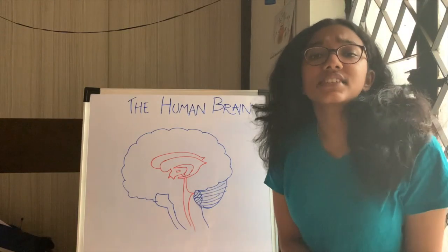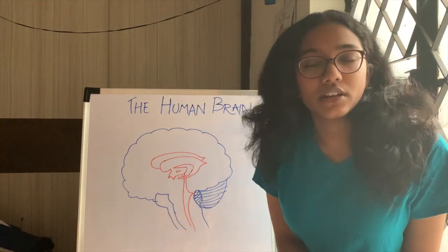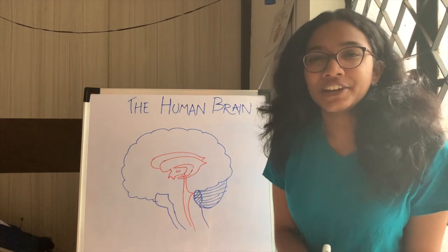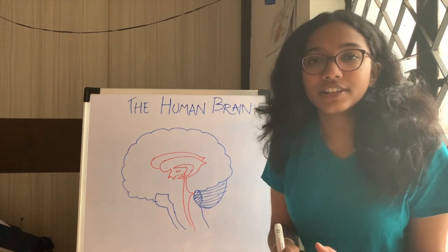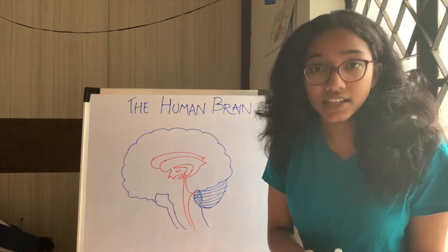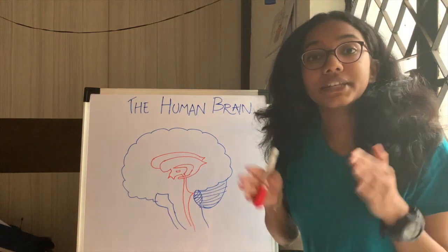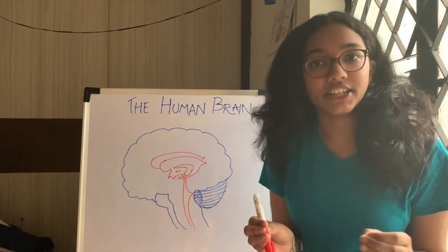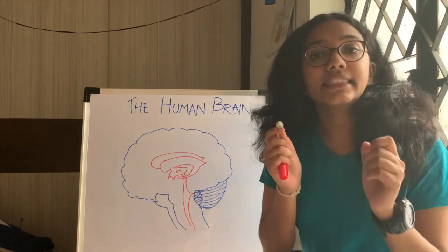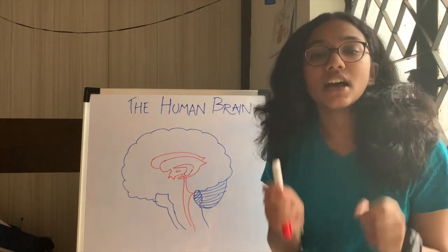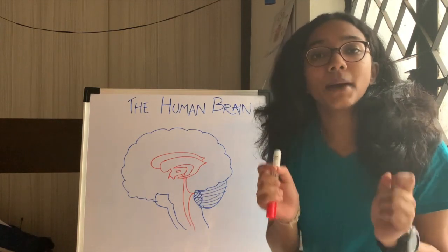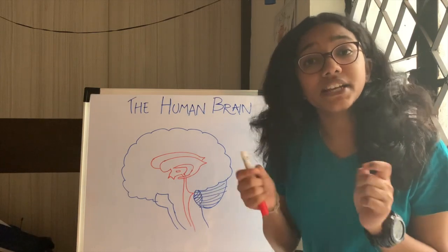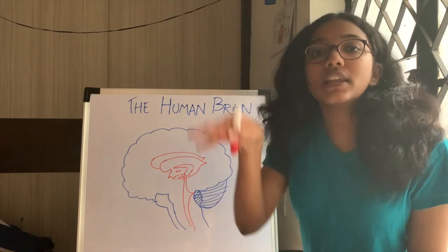Let's first start with ventricles. Now, ventricles aren't those typical atrium and ventricles that you might think about. These ventricles in the brain are basically cavities, and these cavities are lined by cells known as ependymal cells.